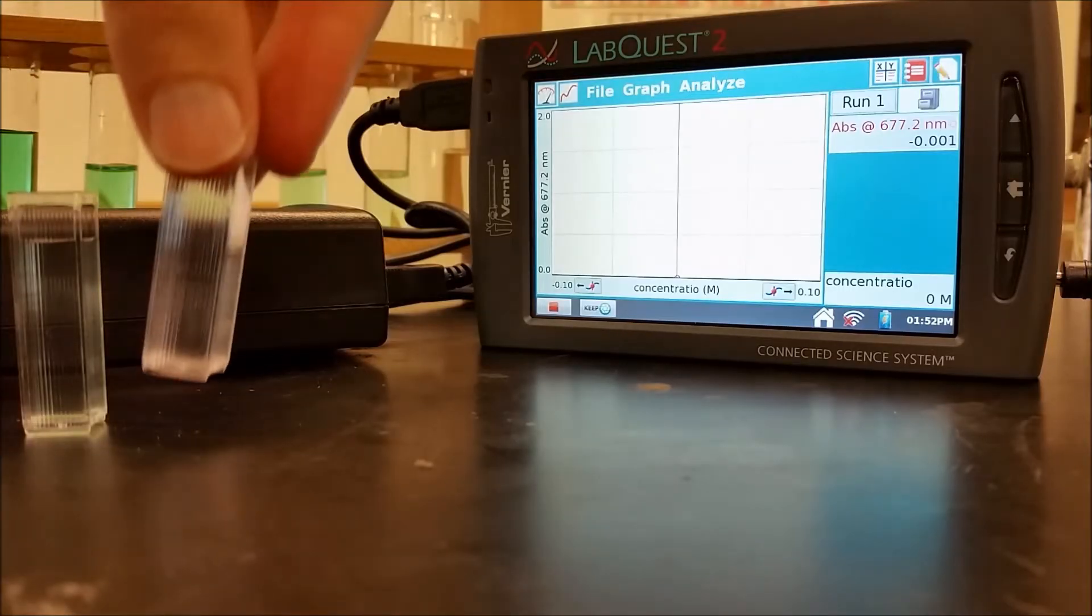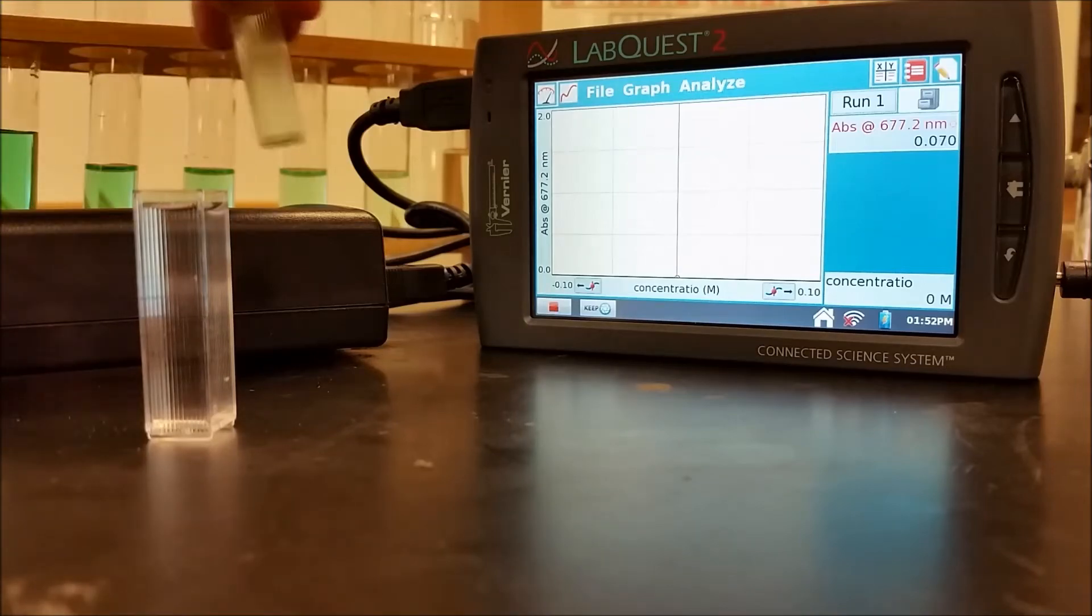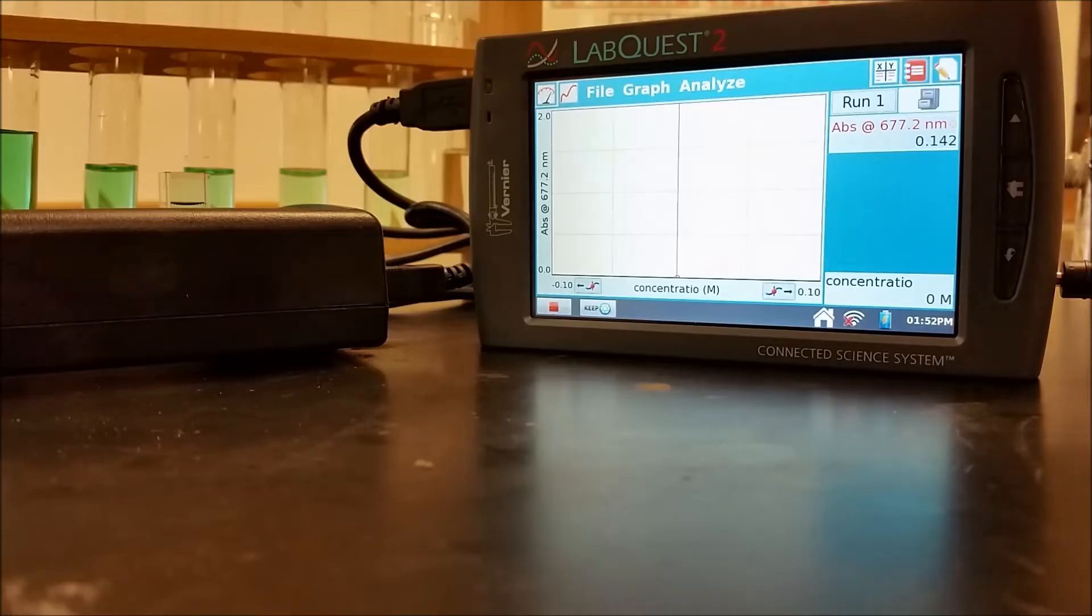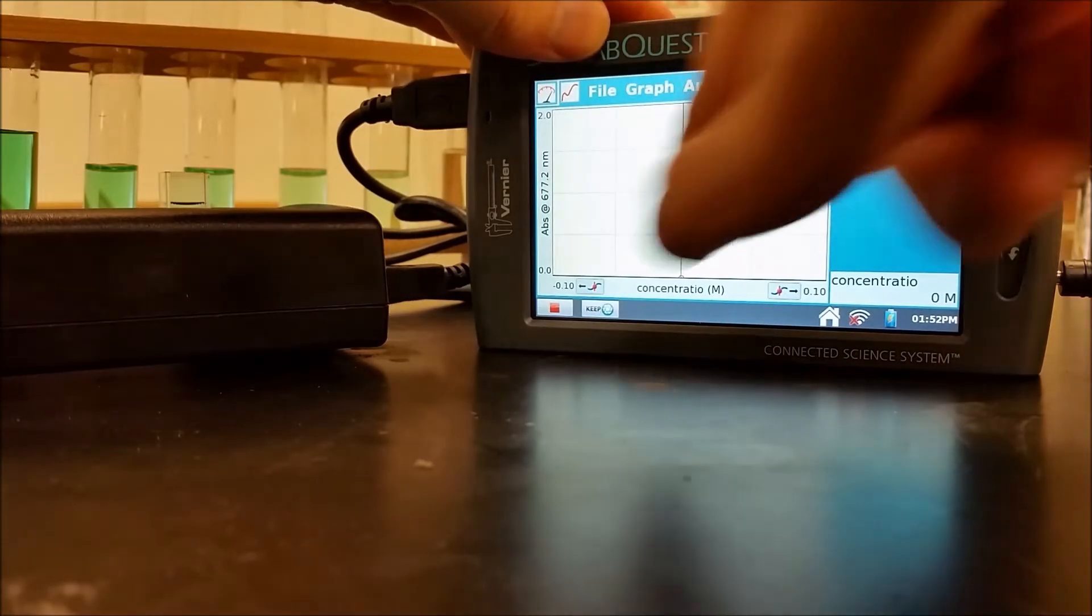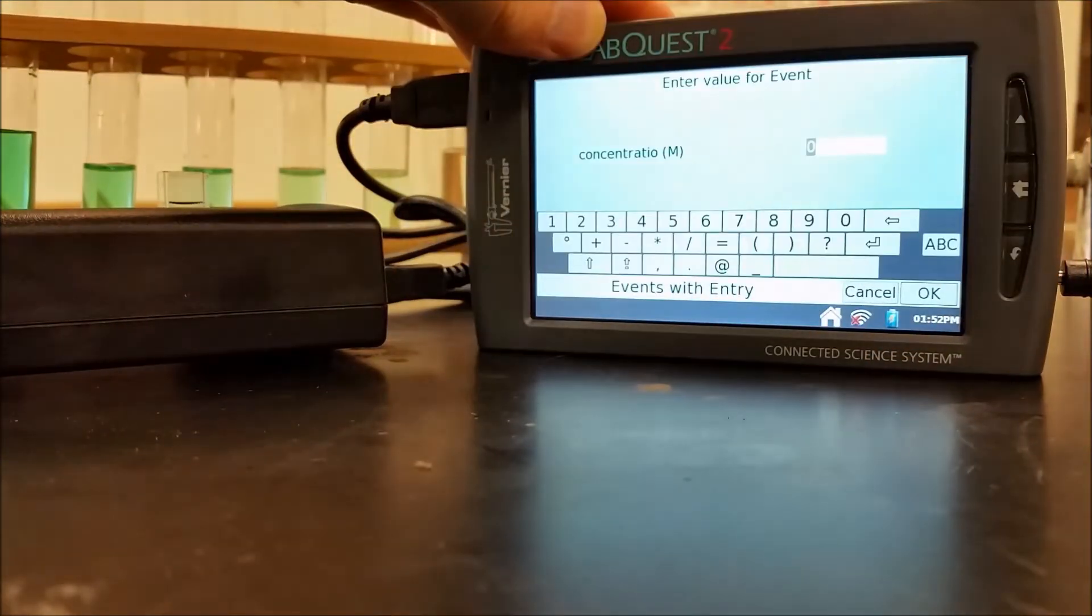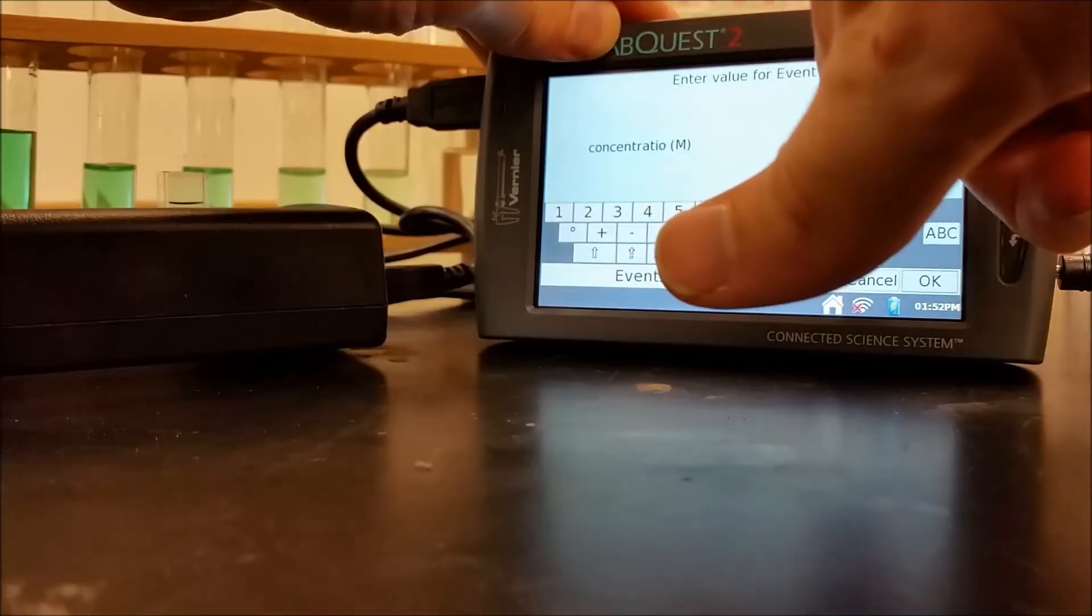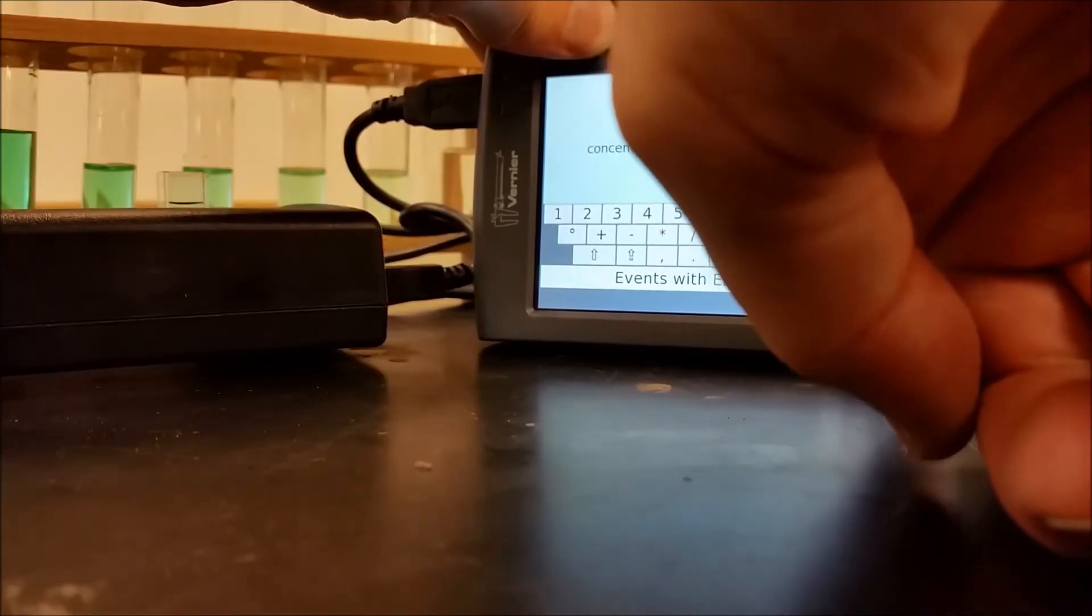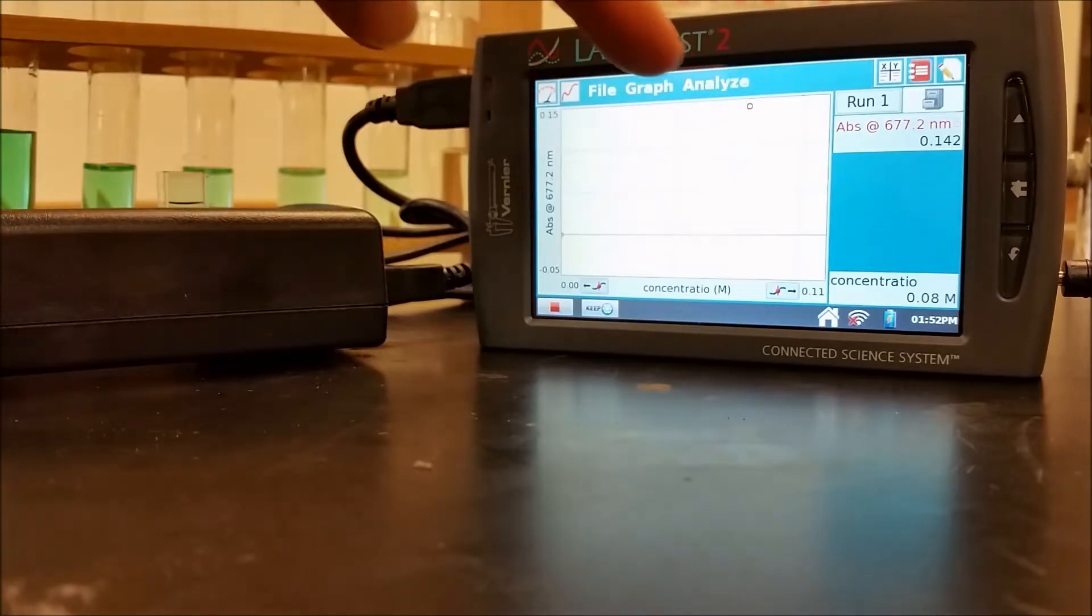So now I'm going to take this out and put in my next one, my 0.08 molar. So I'm going to put that in over here. So now I do have an absorbance, this 0.142. I'm going to hit Keep and type in my 0.08 for my concentration. So that's now plotting what my concentration is versus what my absorbance is.